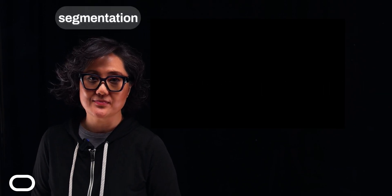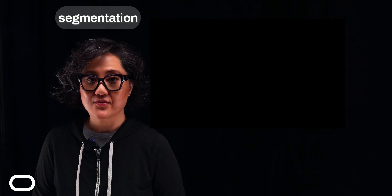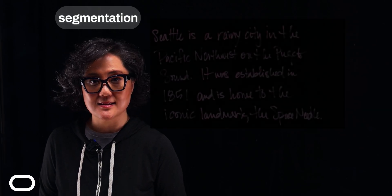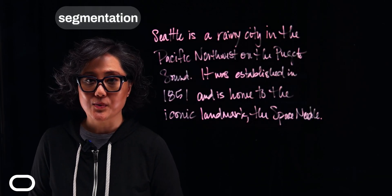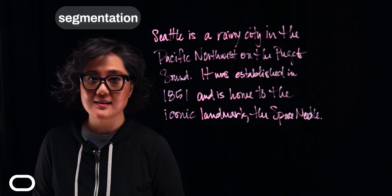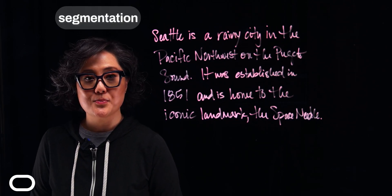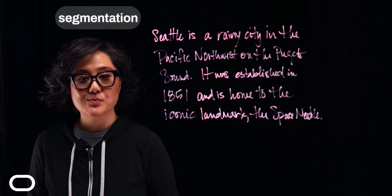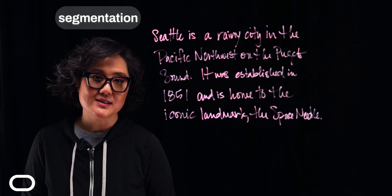The first one is segmentation. This is a necessary first step, which divides large amounts of text into sentences. Let's take this example. Seattle is a rainy city in the Pacific Northwest on the Puget Sound. It was established in 1851 and is home to the iconic landmark, the Space Needle.